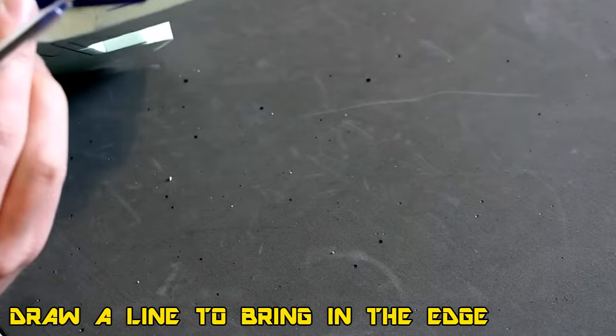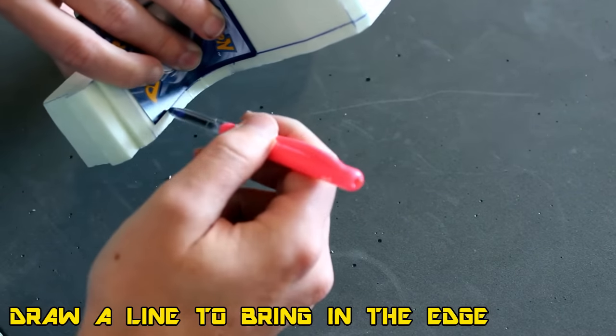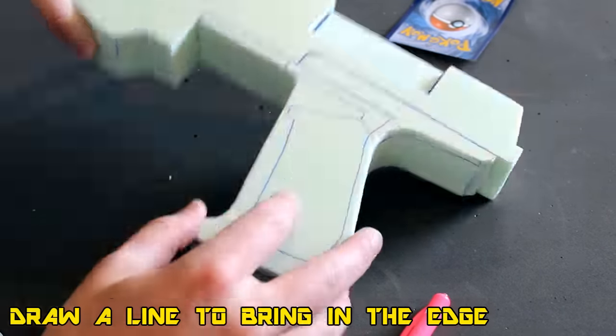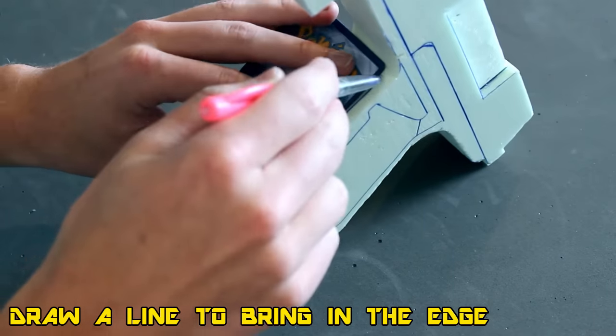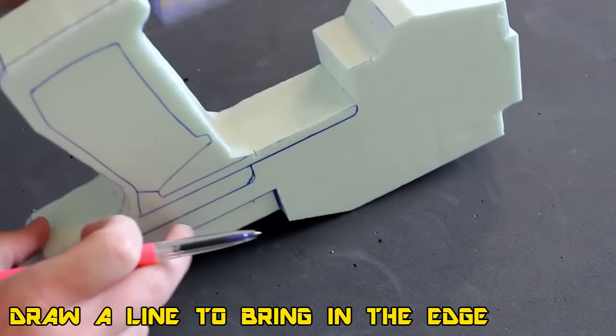Now we're going to add an edge line. This edge line dictates where we're going to have the final depth, so as you can see now I'm going around the perimeter of the sheet drawing a little line.